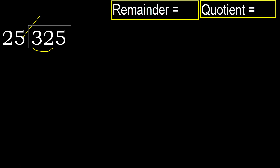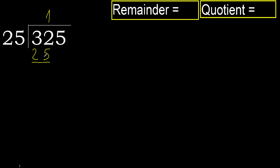25 multiplied by 2 is 50 — 50 is greater. Multiply by 1: 25 is not greater. Ok, 32 minus 25 is 7. Next.